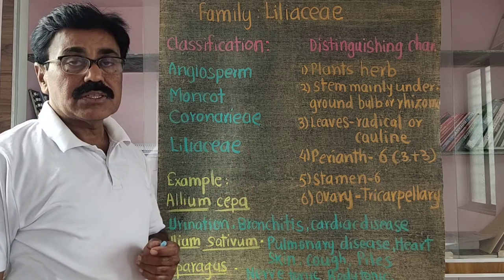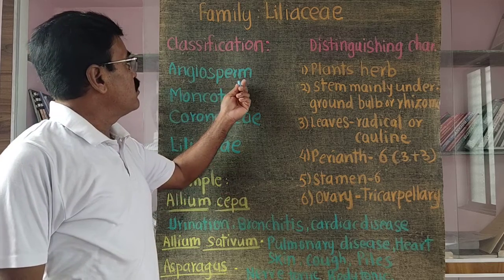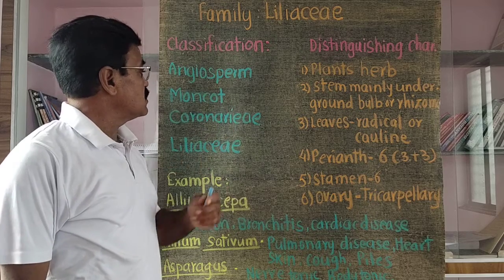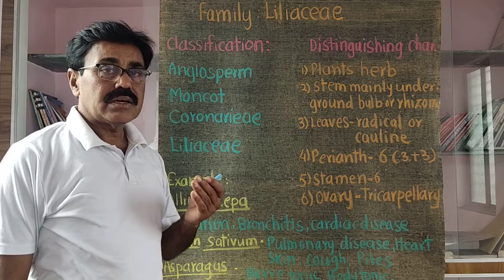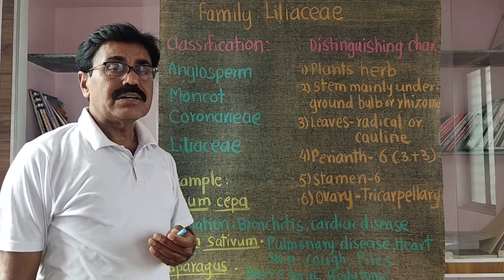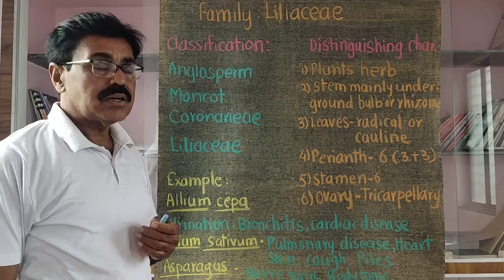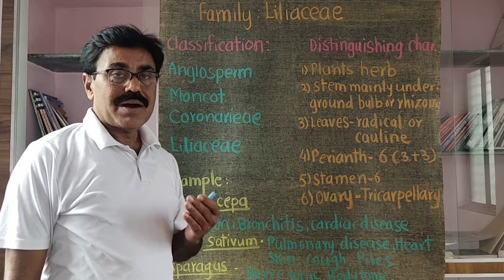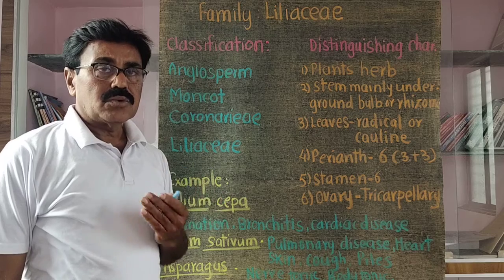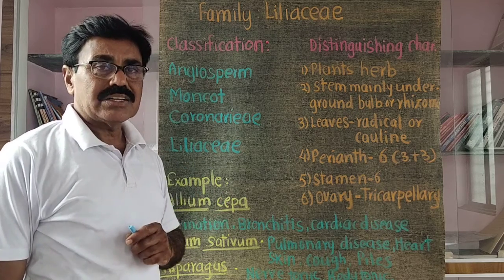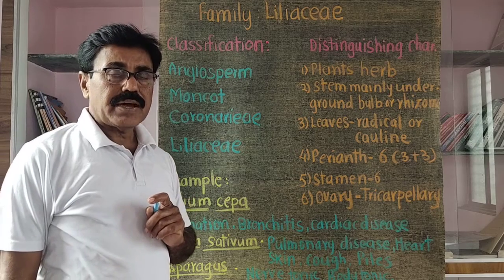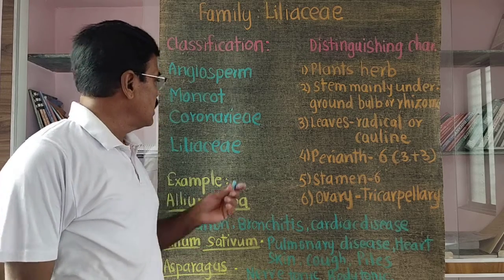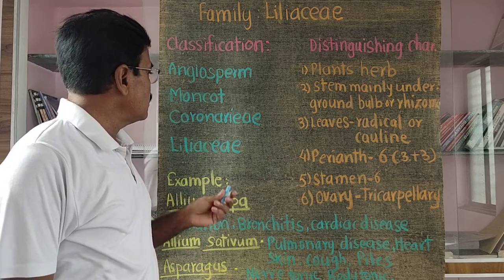As far as the systematic position of family Liliaceae is concerned, the plants belong to Angiospermae — the flowering plants. The class is Monocotyledoneae, because the plants contain parallel venation, adventitious root system, and seeds having a single cotyledon. Vascular bundles are irregularly spread in the ground tissue, and the flowers are trimerous, not tetra- or pentamerous.